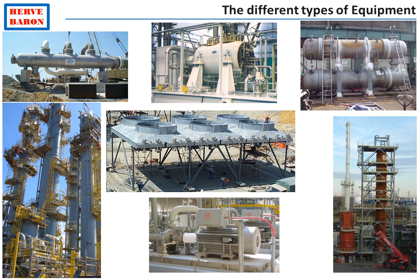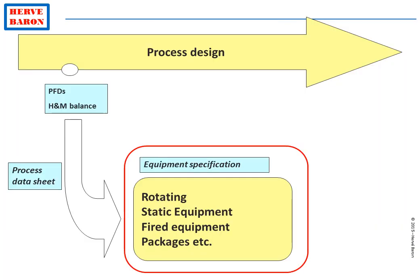The third category is fired equipment, which includes furnaces, boilers, and flare. The last category is packages. The four different specialists all start their work from the functional requirements defined by process and shown on the equipment process data sheet.